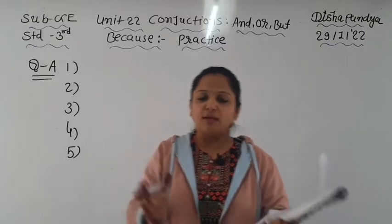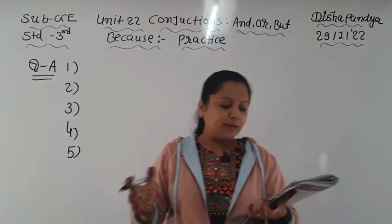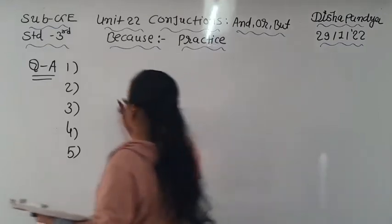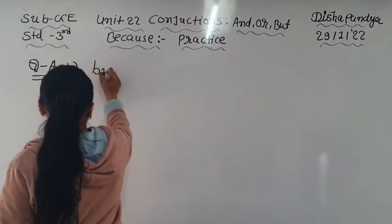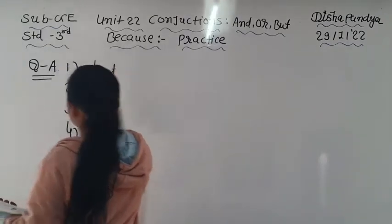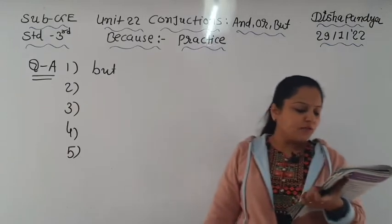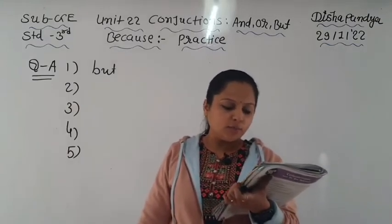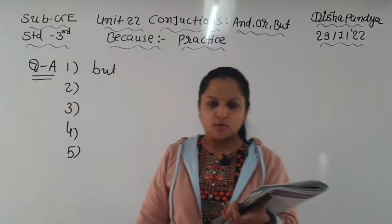I met Venkat, but his sister was not there. So the full sentence is: 'I met Venkat, but I did not meet his sister.' Here we use 'but' because the second part contrasts with the first.